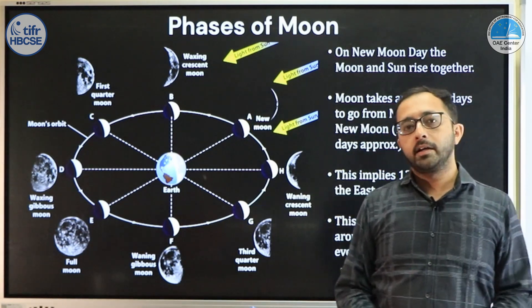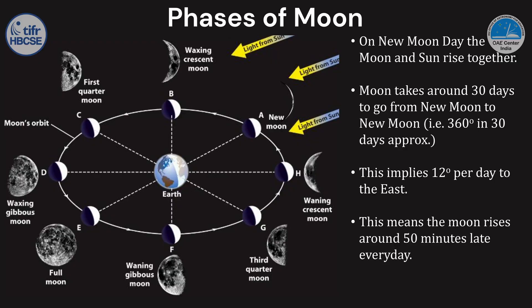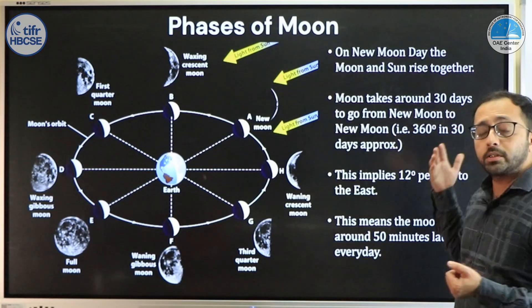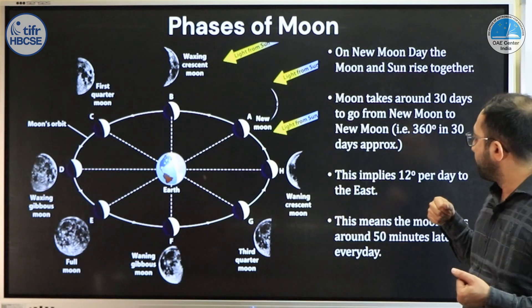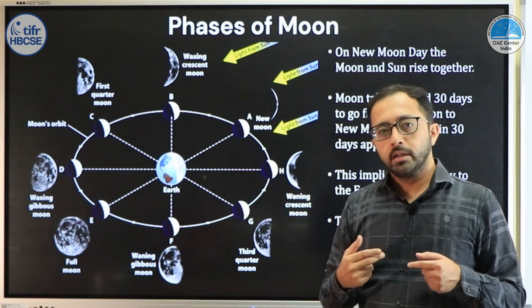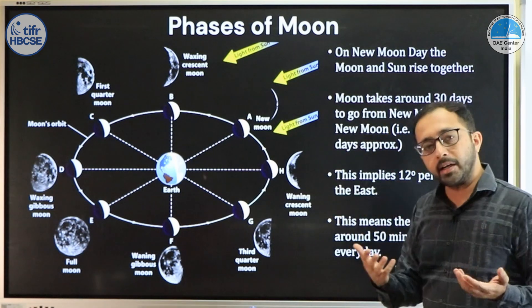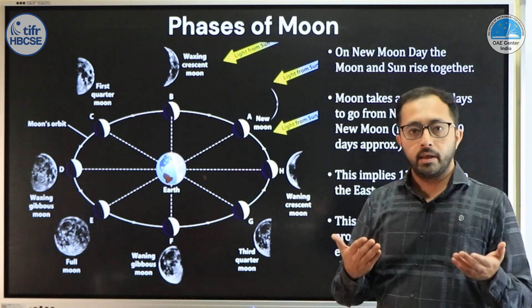This entire cycle takes around 30 days. When the moon is at the new moon phase, the moon rises with the sun and sets with the sun. We know the moon takes around 30 days to go from new moon to new moon, which implies that to complete 360 degrees around the earth the moon takes around 30 days — meaning it covers approximately 12 degrees every day.